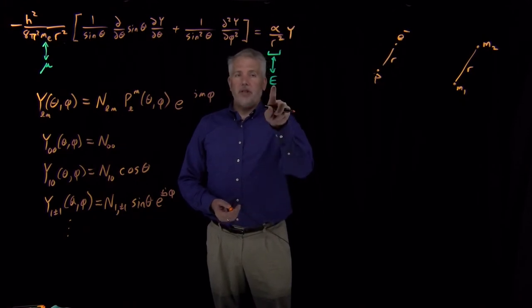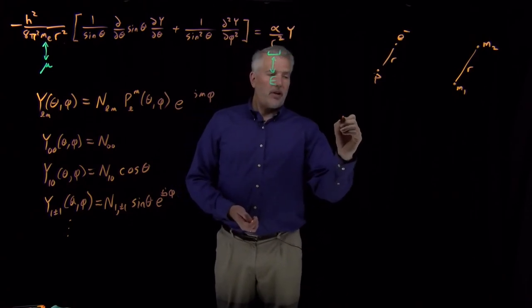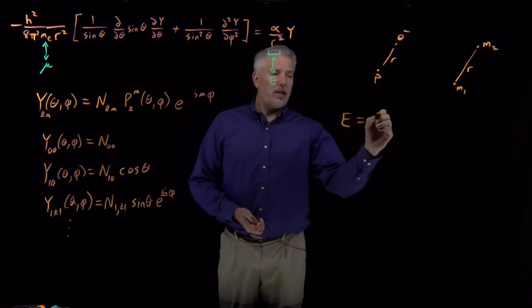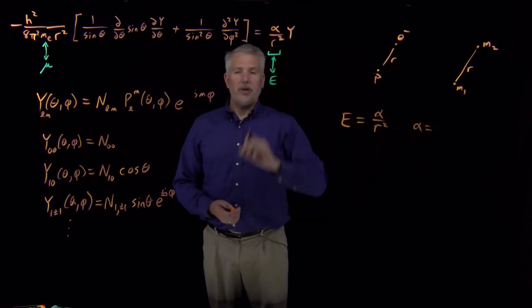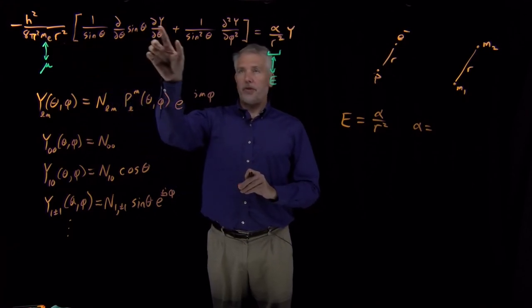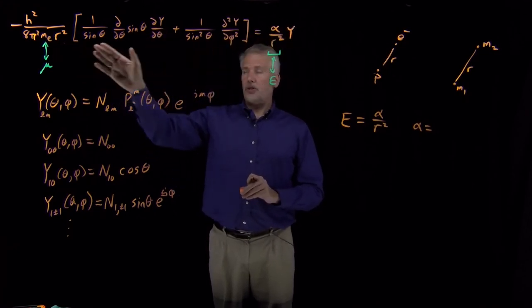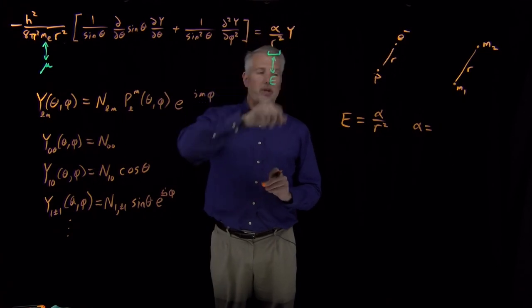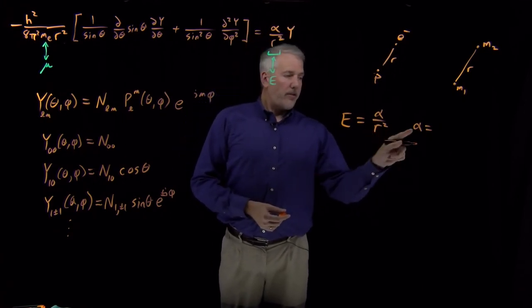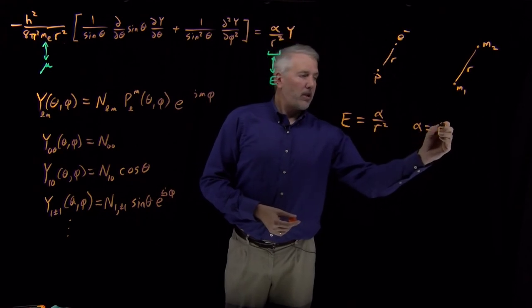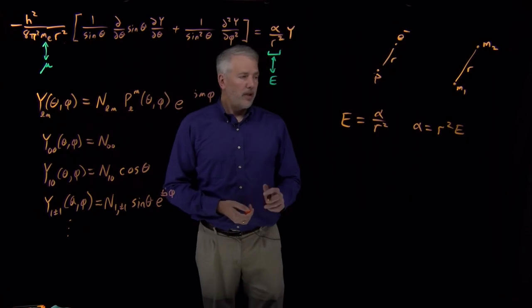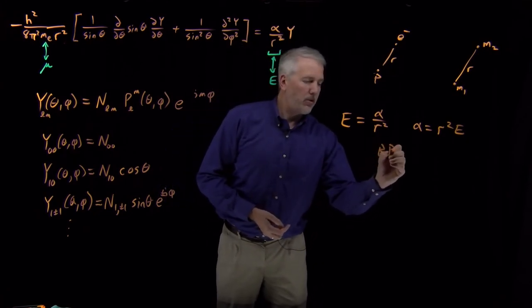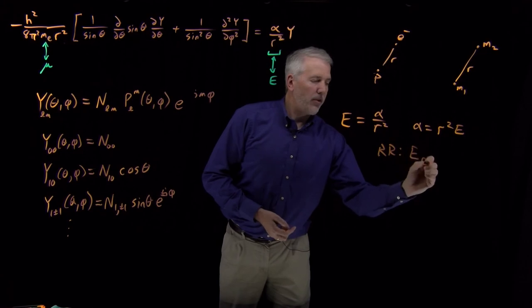The only last thing we have to consider is that energy means something slightly different now than it did before. Previously, our energy now corresponds to this alpha over r squared. So that alpha, this constant alpha that we wanted to know, if I take these derivatives of the angular function, what I get back is an alpha. Where in this new equation, what I get is alpha over r squared times the original function. So the value of this alpha is r squared times what we used to think of as the energy of the rigid rotor.